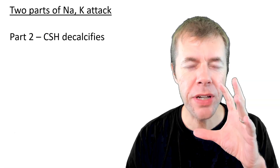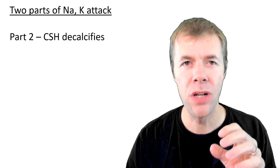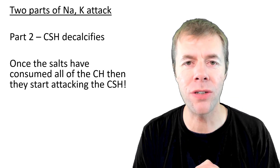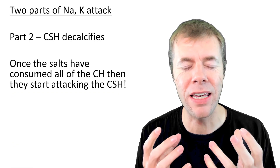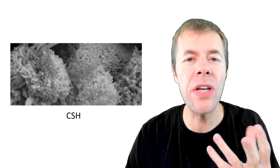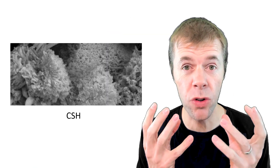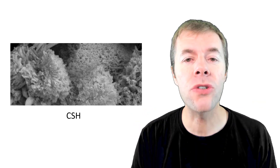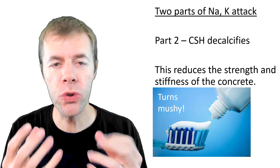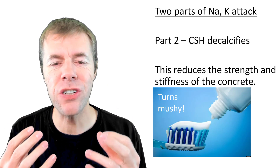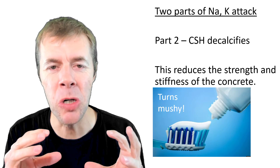But then part two — it's when calcium silicate hydrate actually decalcifies. After the salts have used up all the calcium hydroxide, they look for something else to munch on, and they start attacking the calcium silicate hydrate. This is CSH — this corally tight material — and this is what gives concrete its strength. Super important. What it starts doing is it starts knocking holes in it. And Dalsam is the same way: if he gets a hold of you, he'll just beat you down. This is going to reduce the strength and stiffness of your concrete, and it's going to basically turn it into mush or nothing.